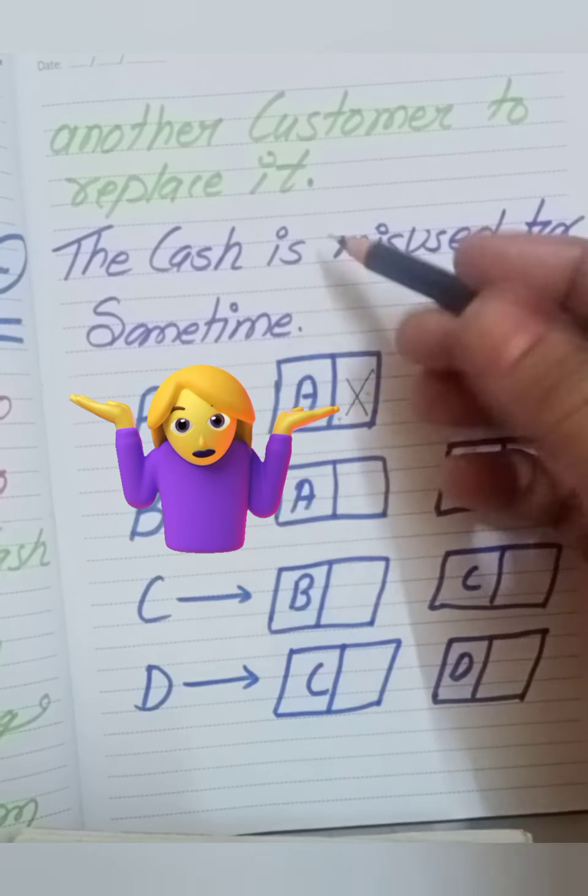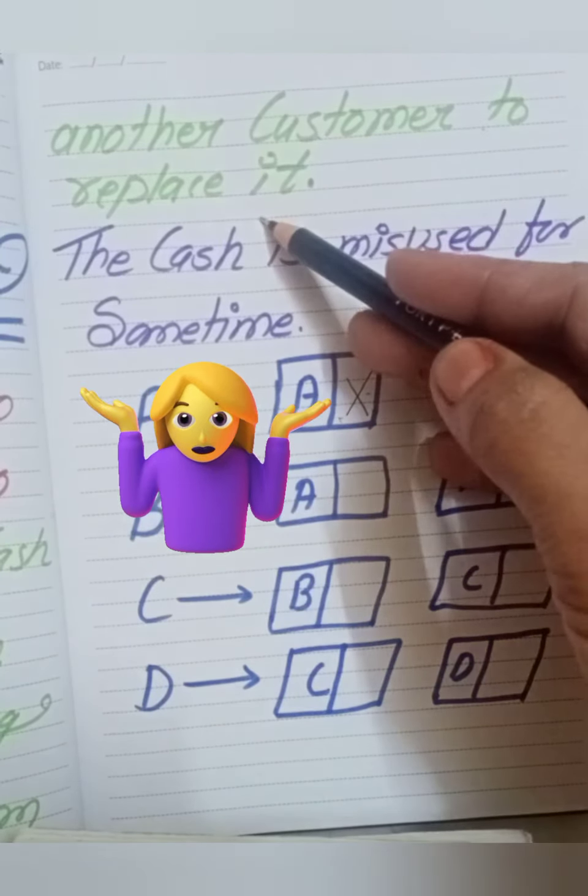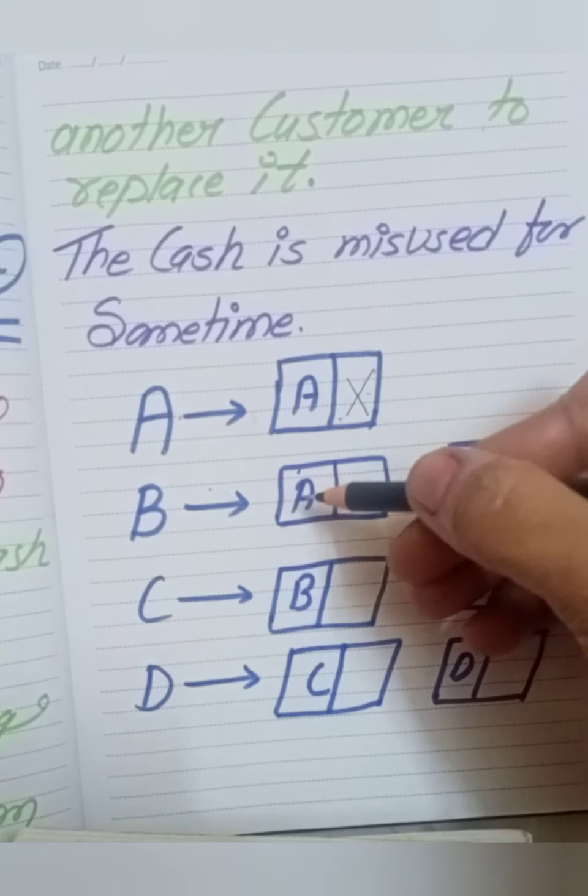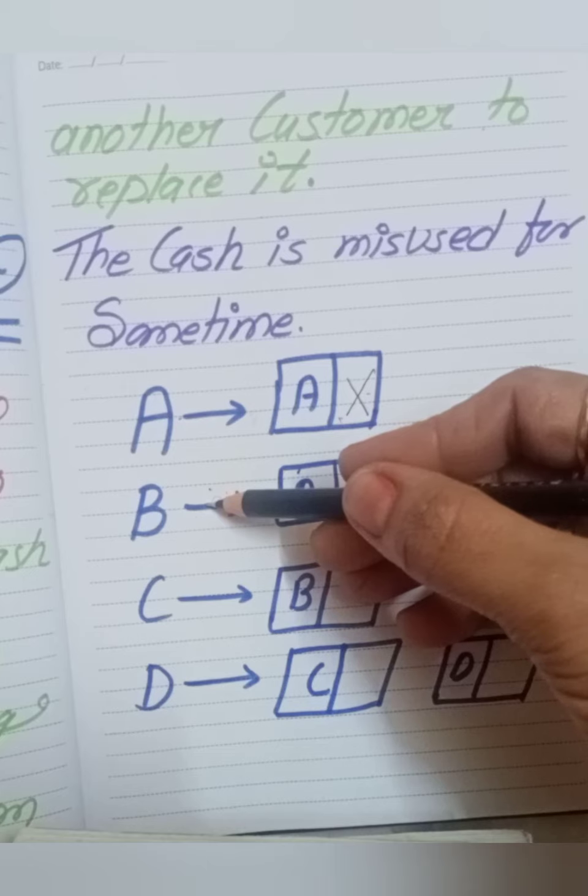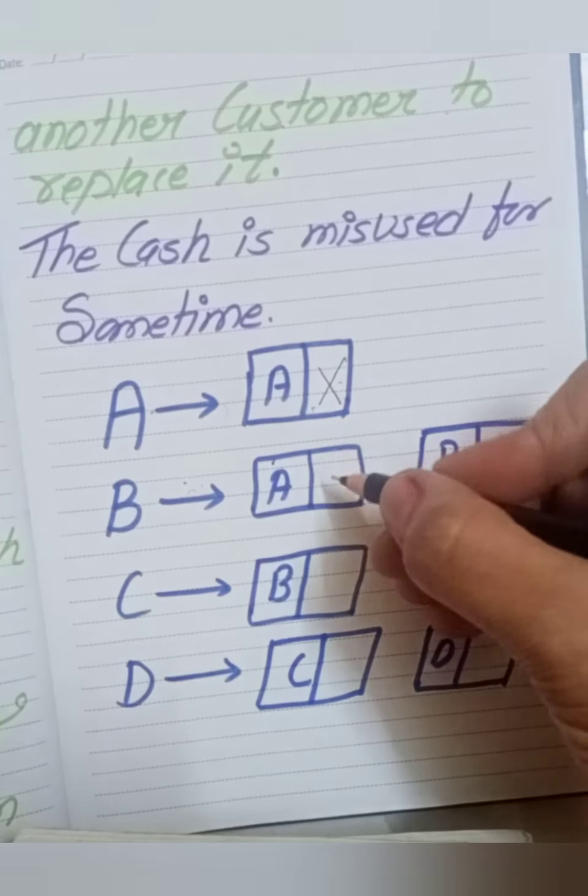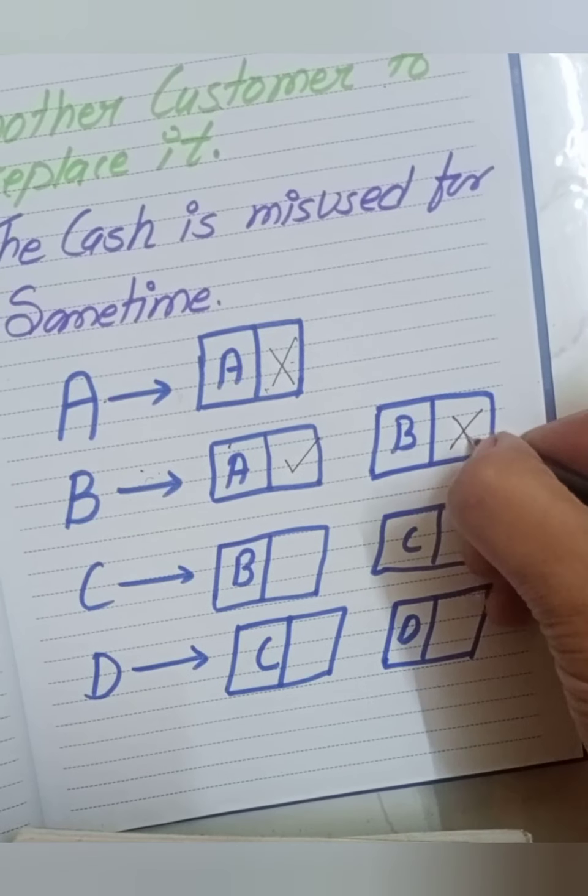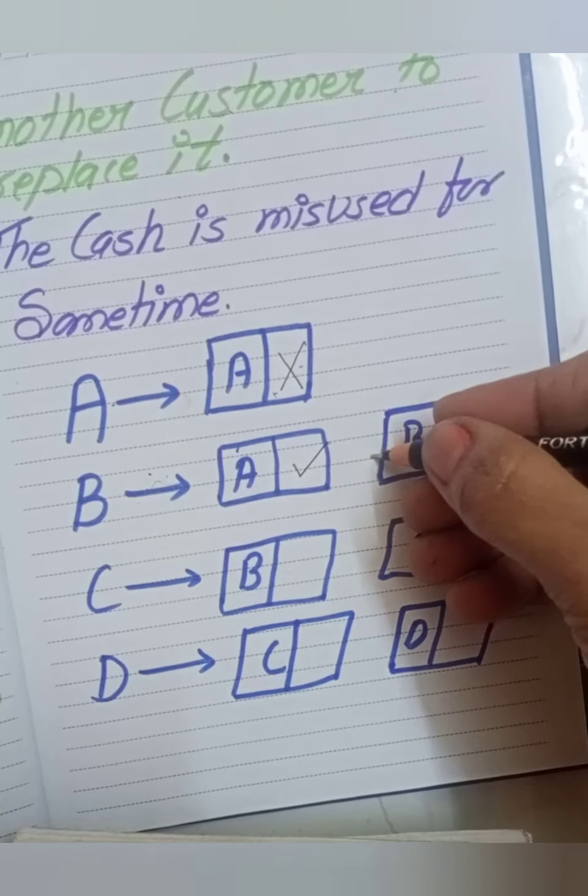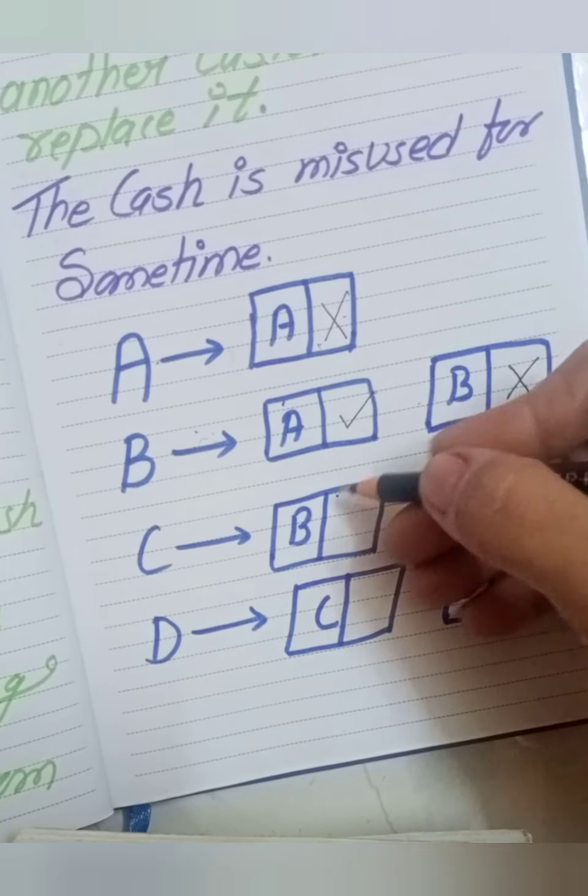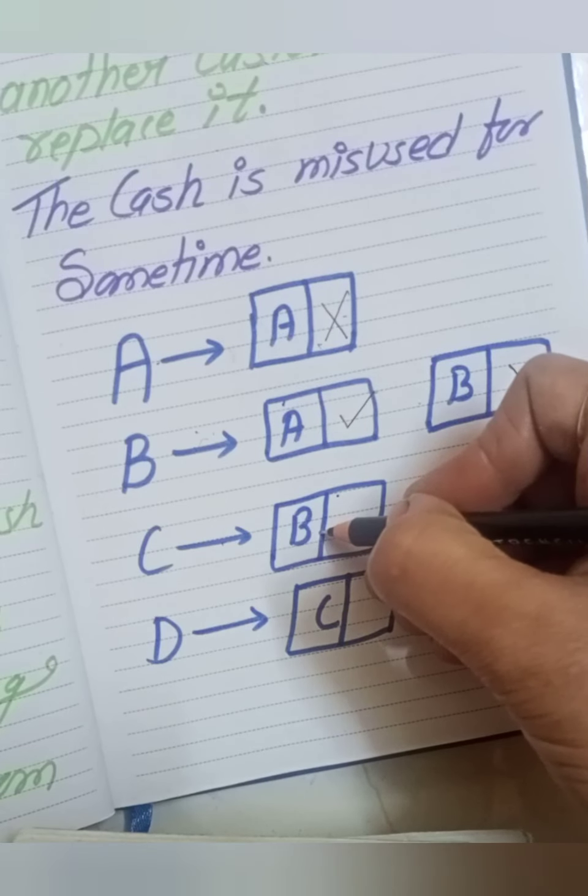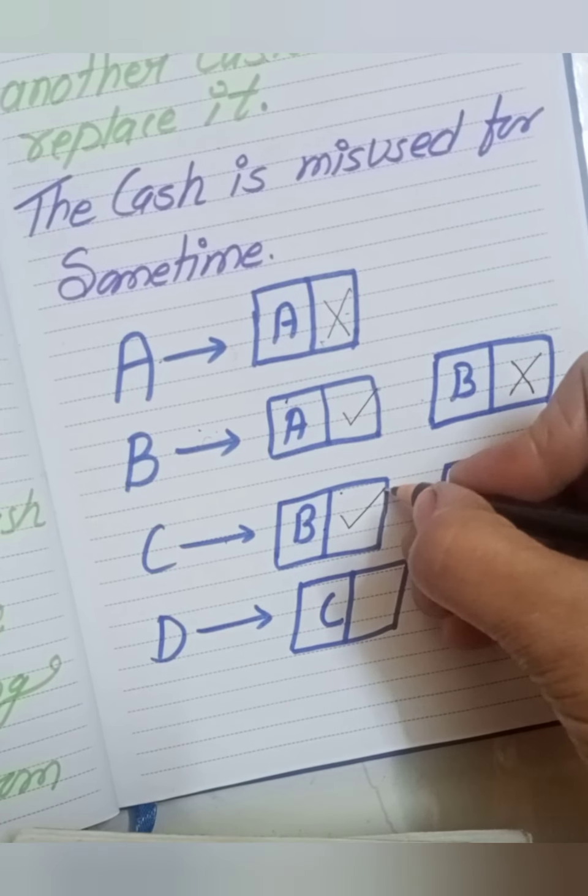Another customer comes to replace it. Now what I have done is taken customer B's money. Customer A has put the money but no one knows because I have used customer B's payment to cover it. The same condition happens here. When customer C comes, I put C's money into B's account.